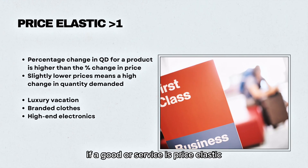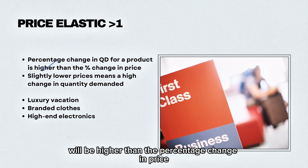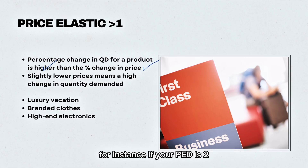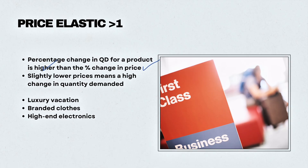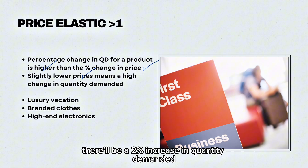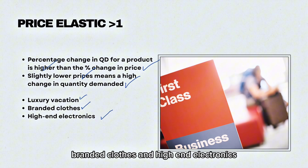If a good or service is price elastic, this means the percentage change in quantity demanded will be higher than the percentage change in price. For instance, if your PED is 2, that means for every 1% change in price there will be a 2% change in quantity demanded. So if there was a 1% drop in price there'll be a 2% increase in quantity demanded. Some examples include luxury vacations, branded clothes, and high-end electronics.